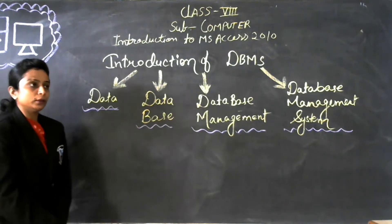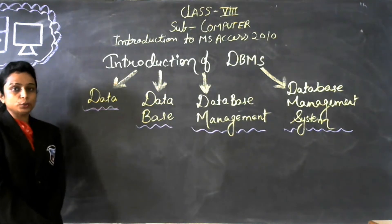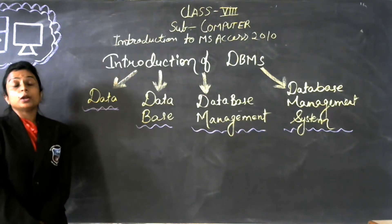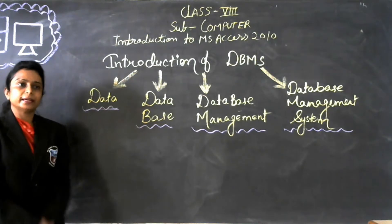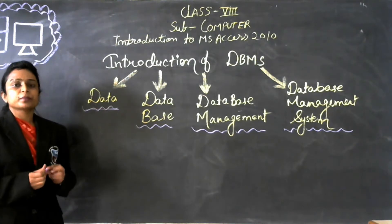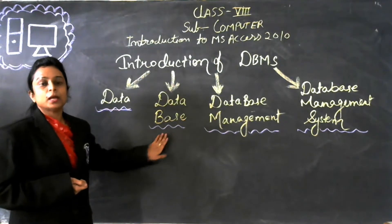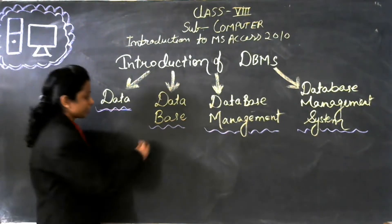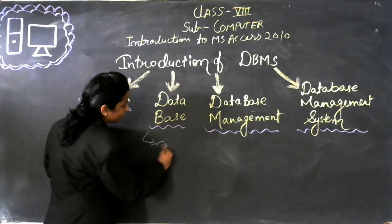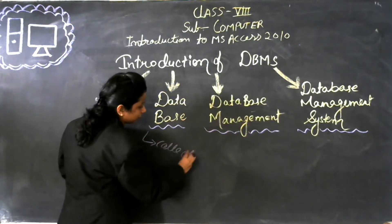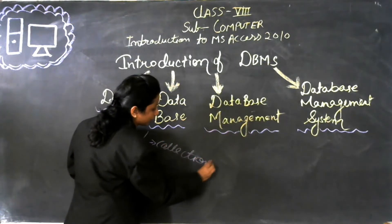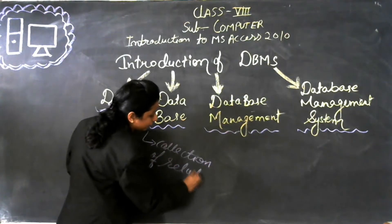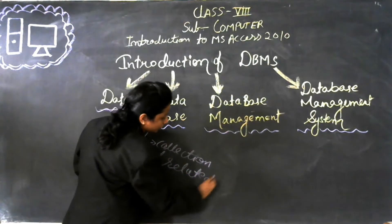If we are talking about any organization or any institute, data is like information but not exactly information — data can be anything. The next term is database. Now what is database? Database is a collection of related data.